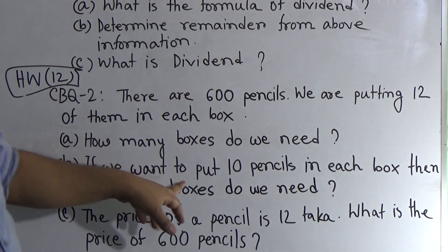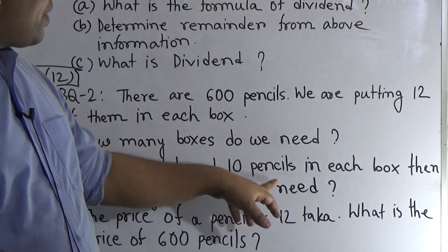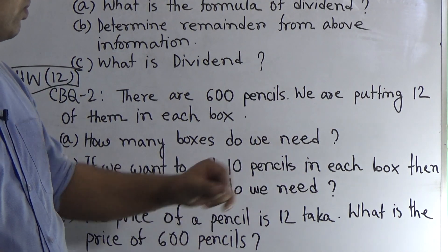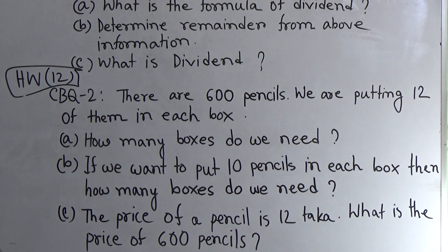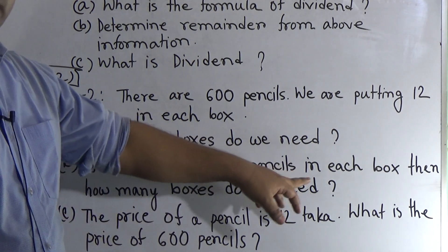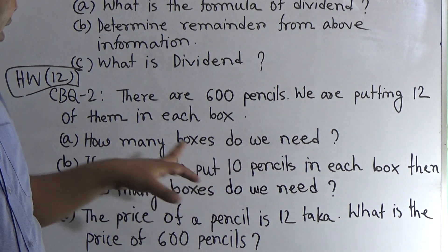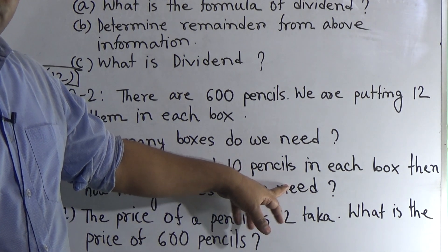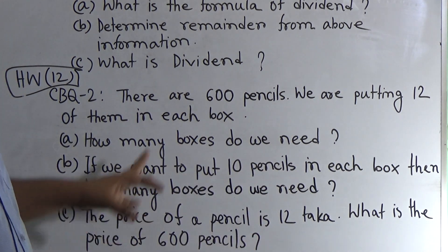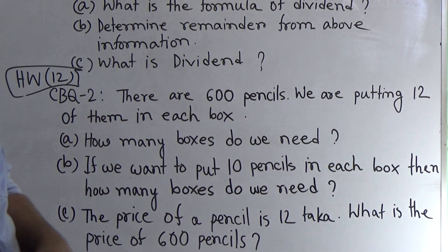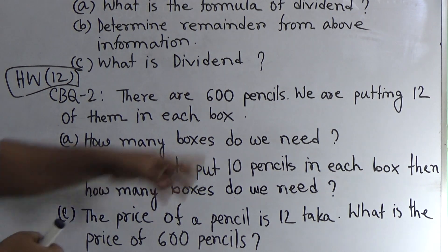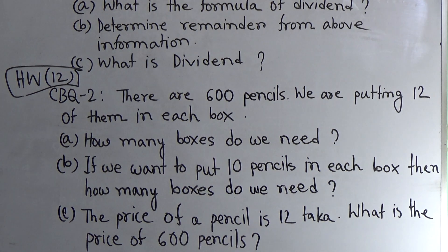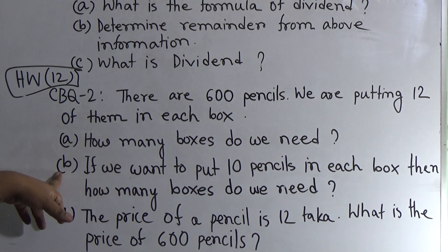Part B: If we want to put 10 pencils in each box instead of 12, then how many boxes do we need? This time we put 10 pencils in each box, not 12. In one box we put 10 pencils, so 600 pencils are put in how many boxes? We divide 600 by 10 and we get the required number of boxes.